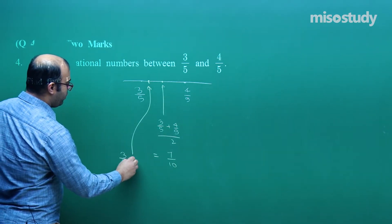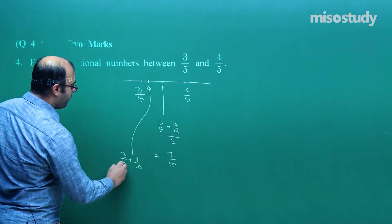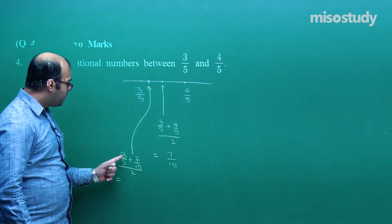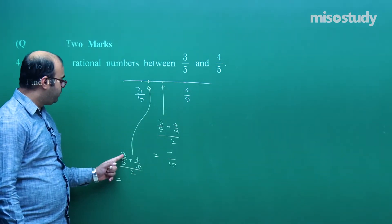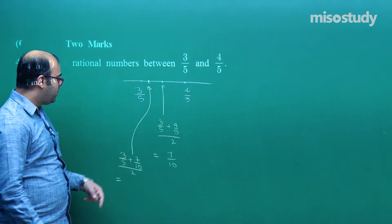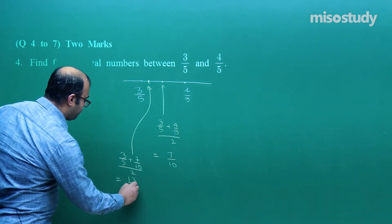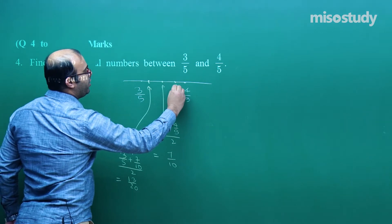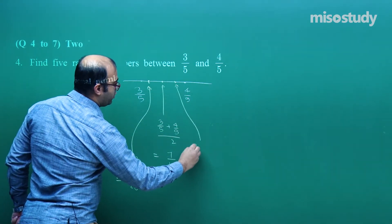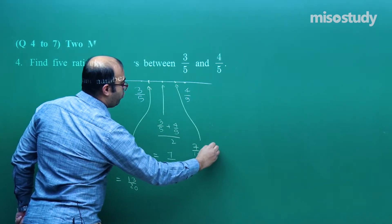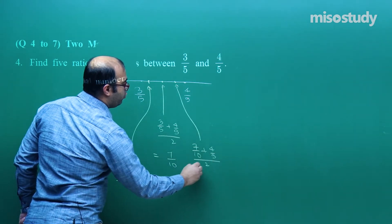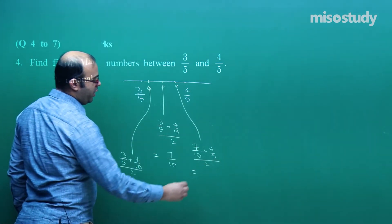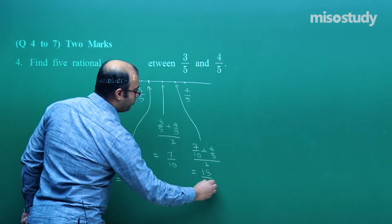Next, we find a point between 3/5 and 7/10: (3/5 + 7/10) / 2 = (6 + 7) / 20 = 13/20. Then we find a point between 7/10 and 4/5: (7/10 + 4/5) / 2 = (7 + 8) / 20 = 15/20. So we now have three rational numbers.